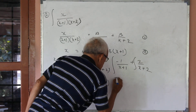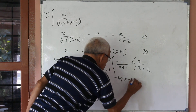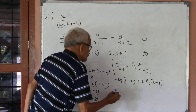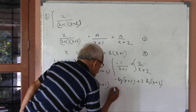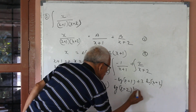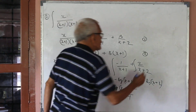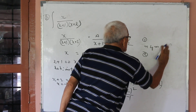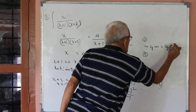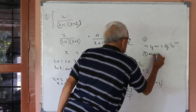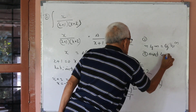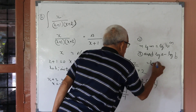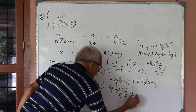Substituting in 1: minus 1 by (x+1) plus 2 by (x+2). Integrating: minus log(x+1) plus 2 log(x+2). That is log (x+2) whole square by (x+1), using N log M equal to M raised to N, and log A minus log B equal to log (A by B).